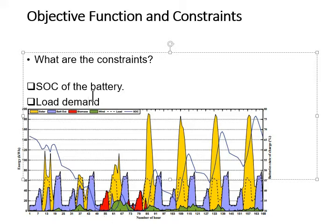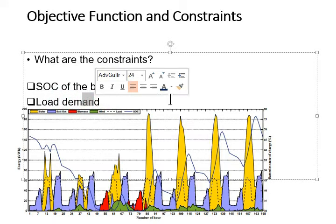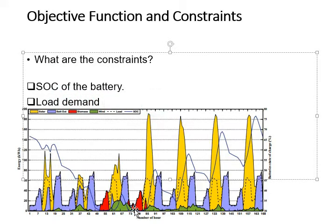The second constraint is to meet the load demand at each hour throughout the year. This condition is met, as shown by the graph. The red portions indicate that renewable energy resources plus battery storage is not sufficient to meet the load demand, so DG or gasifier has come to meet the deficient amount of load demand.